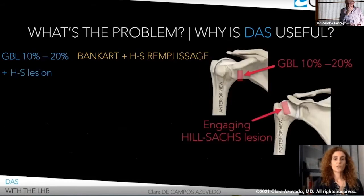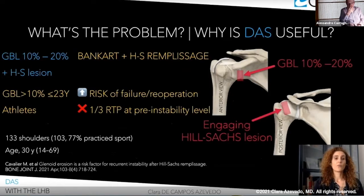Another option for subcritical glenoid bone loss that has been proposed is the arthroscopic Bankart repair with the Remplissage. However, in bony defects of more than 10% in patients under 23 years old, the group of Professor Boileau, Cavalier, and co-authors found that there was a high risk of failure and re-operation after this procedure, and that one-third of athletes playing high-level contact sports were not able to return to play at pre-instability level.